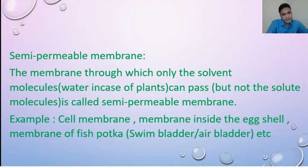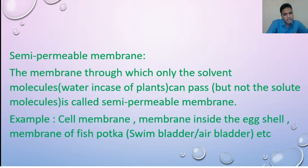Now, semipermeable membrane: the membrane through which only the solvent molecules — like water in case of plants — can pass, but not the solute molecules, is called semipermeable membrane. Only the solvent molecule can pass, but not solute. Examples: cell membrane, membrane inside the egg shell, membrane of fish air bladder or swim bladder, etc.